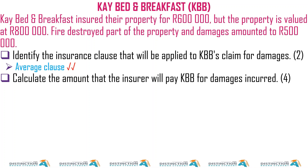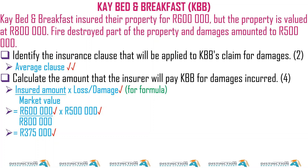The formula is: insured amount over market value, times the damage. So 600,000 over 800,000 times 500,000 gives you 375,000. In the exam, you simply write 600 over 800 times the damages and you get the answer. This question is basically a free six marks — they ask you to identify the insurance clause, which is always average clause, and then calculate.